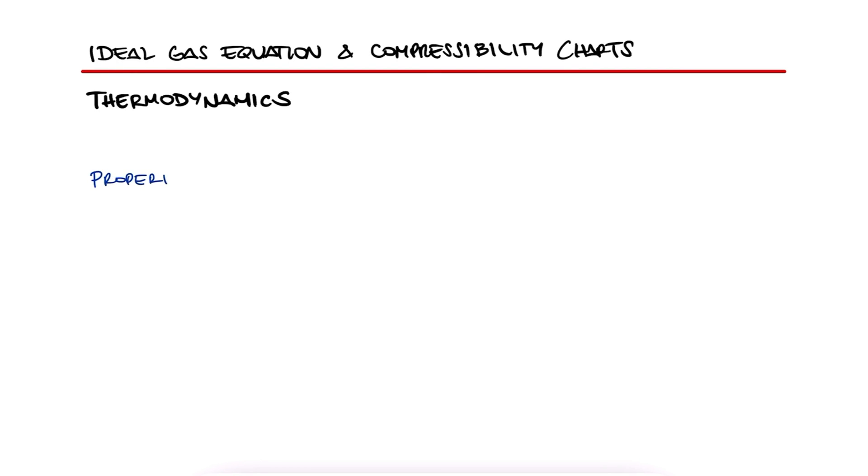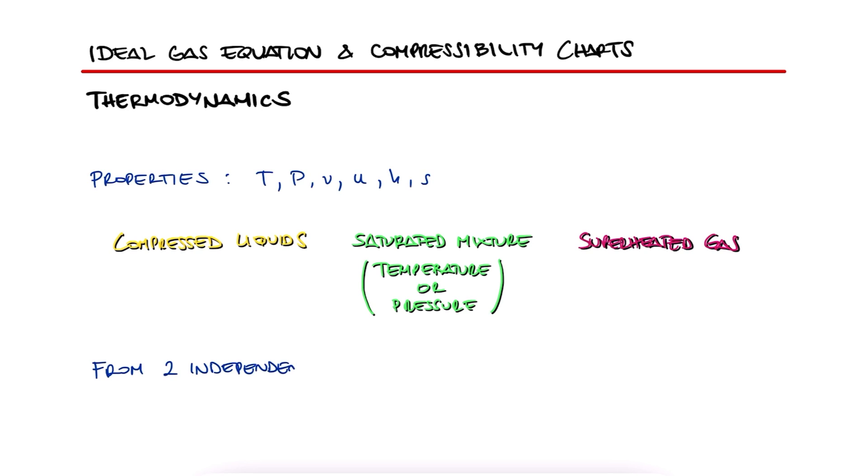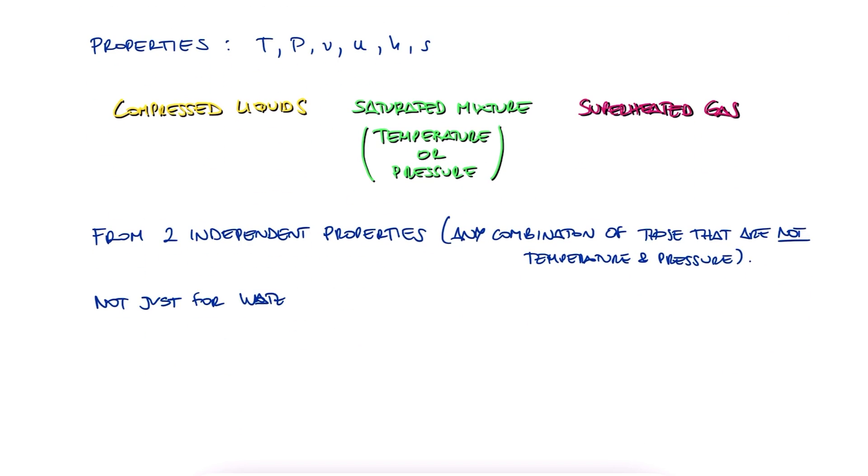So far, we've learned how to find properties of water and other substances using the tabulated values found in property tables, like compressed liquids, saturated liquid vapor with temperature or pressure, and superheated vapor. We established that if we know two independent properties, we can find all the other properties using these tables. These tables exist for other substances like refrigerants, ammonia, and propane.